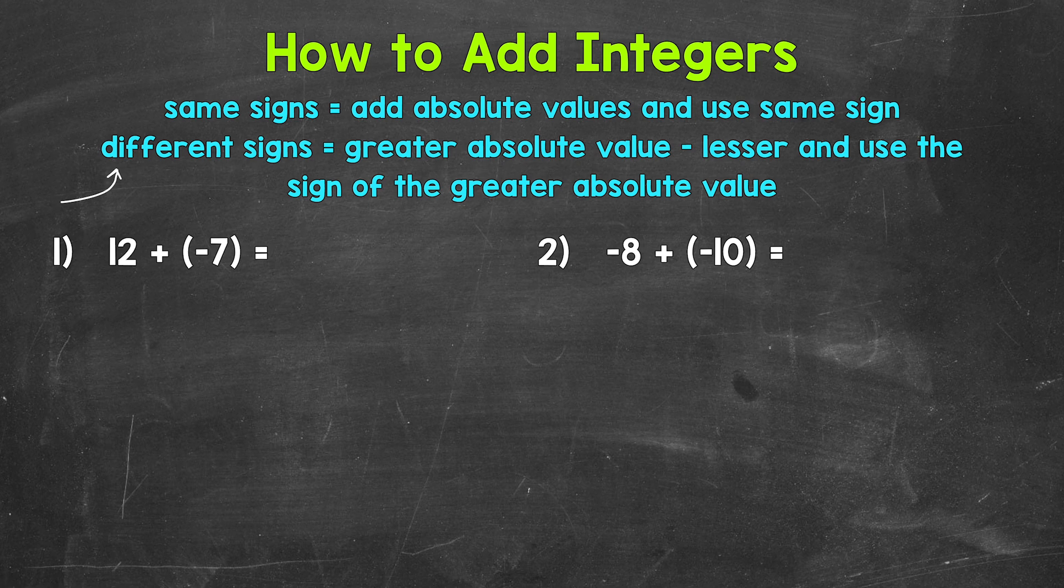Our answer will take the sign of the greater absolute value. Let's start by writing the absolute value of both 12 and negative 7. And remember, absolute value is the distance a number is from zero. The absolute value of 12 is 12. The absolute value of negative 7 is 7.